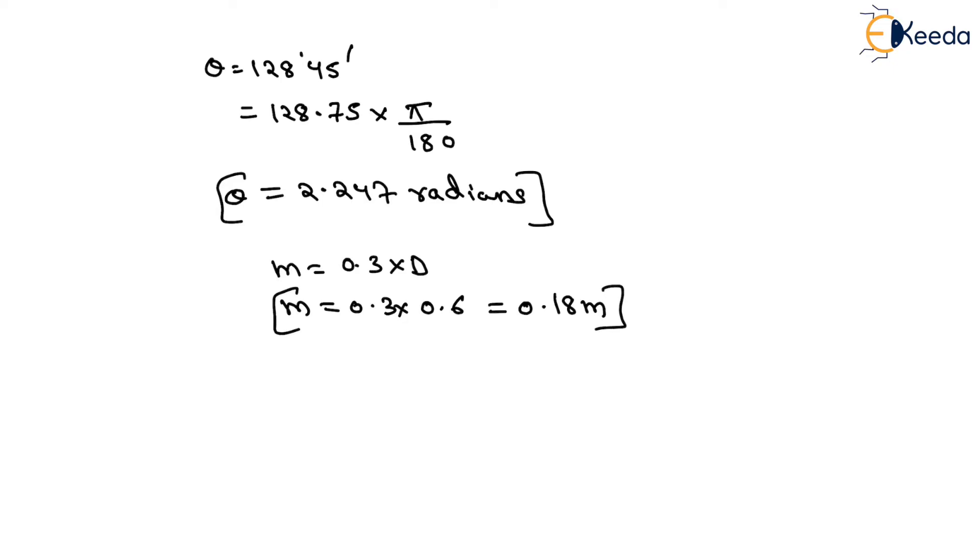Now, wetted perimeter for circular pipe is given as P equals to 2R theta, so it will be equals to D theta. On putting the value of D as 0.6 and theta as 2.247, it will be equals to 1.3482 meter.